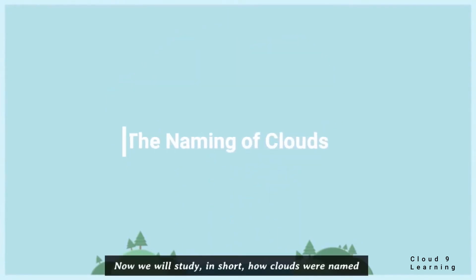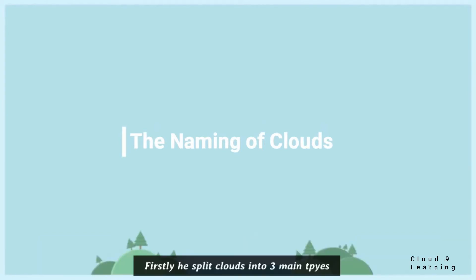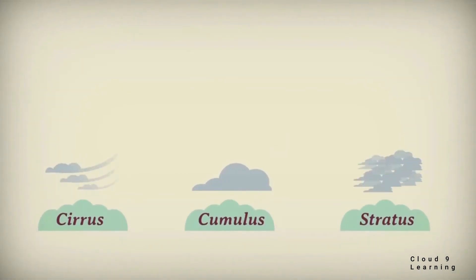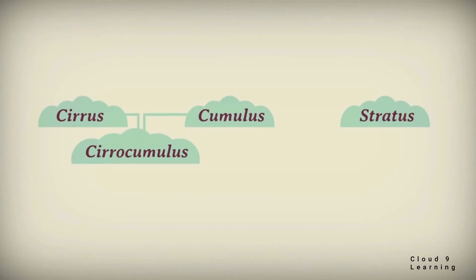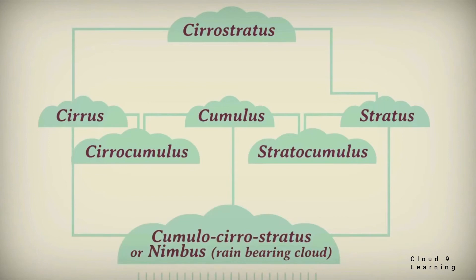Now we will study in short how clouds were named. In 1803, a British chemist Luke Howard devised a classification system for clouds. He gave clouds Latin names corresponding to their appearance and altitude. He split clouds into three main types: Cirrus, Cumulus and Stratus. He combined Cirrus and Cumulus to form Cirrocumulus, Cumulus and Stratus to form Stratocumulus, and Cirrus and Stratus to form Cirrostratus. Then all three combined to form Nimbostratus.